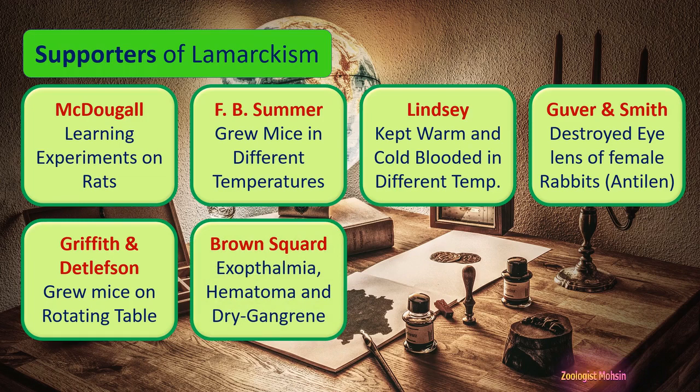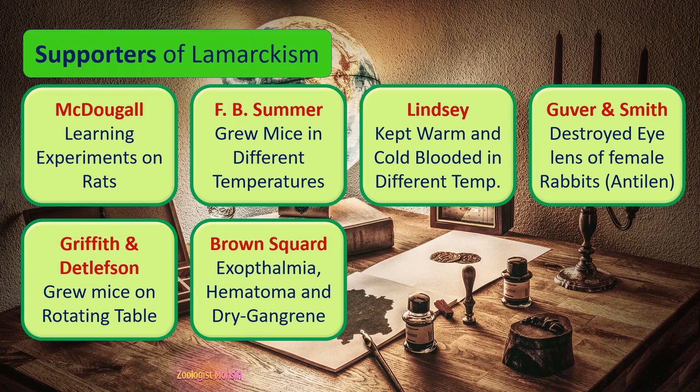Similarly, Brown Squad was another scientist who observed certain acquired diseases due to injury — for example, exophthalmia, hematoma, and dry gangrene. These are acquired diseases mostly due to injury in the brain cells. He noted that these diseases were heritable and were inherited by the offspring, even though newborns had no such injury. He concluded that acquired characters can be transmitted from parents to offspring, supporting Lamarckism.